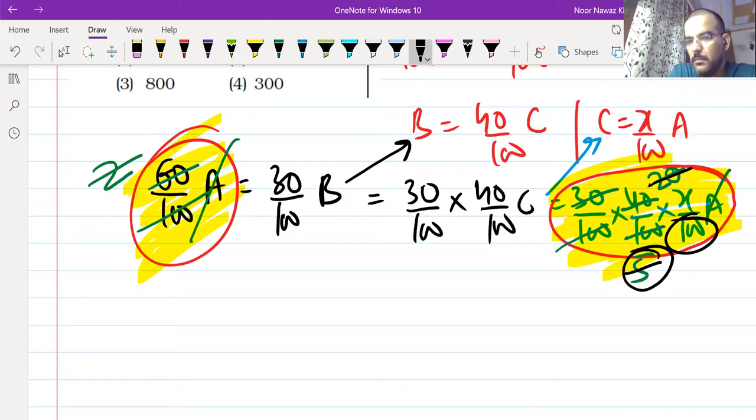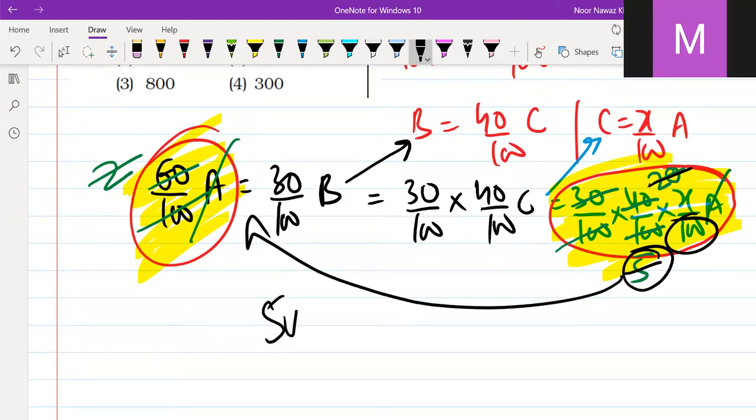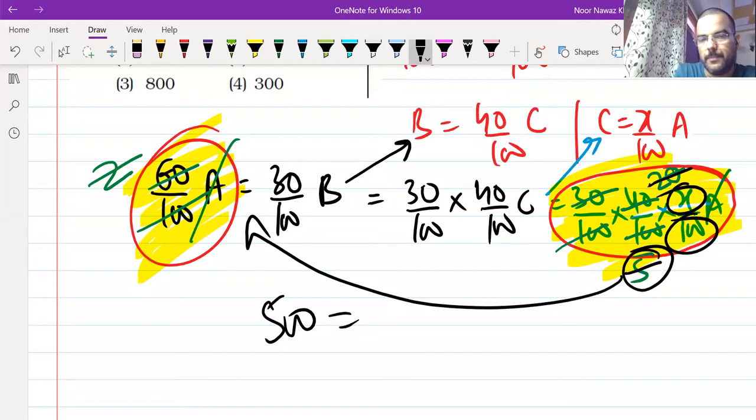So, 5 into 100? So, 5 into 100 will come here. So, who will save here? X? This is the answer.